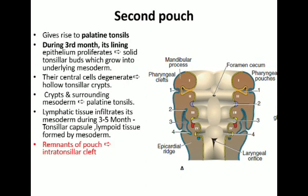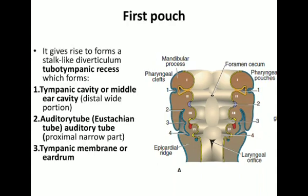The second pouch gives rise to the important structure, the palatine tonsil. During the third month, the lining of this pouch proliferates and forms a tonsillar bud, which grows into the underlying mesoderm.